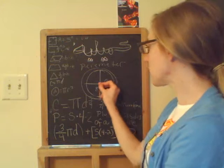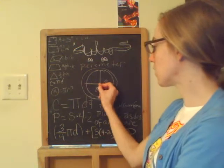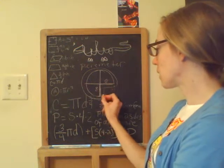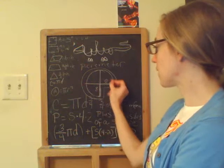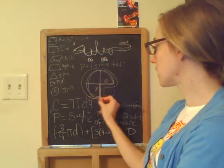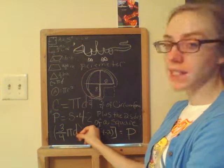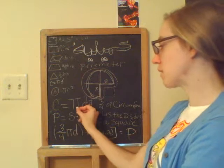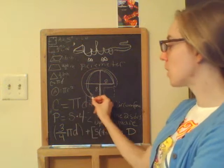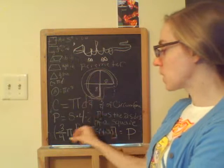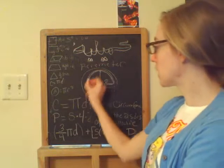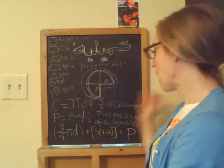And then looking here, it looks like we get these two sides here. Plus, we're going to find this distance here by finding three-fourths of pi d. The circumference is pi d, so three-fourths will give us this distance here.